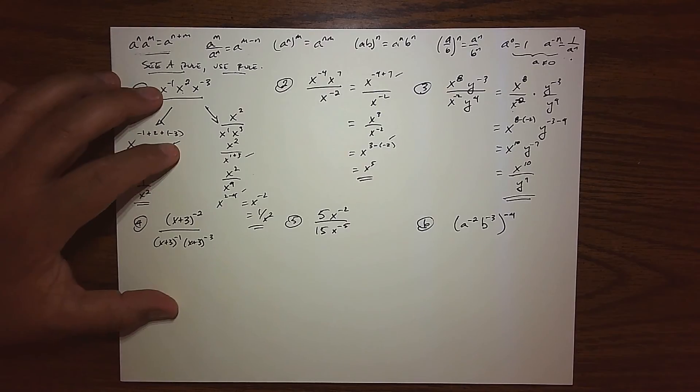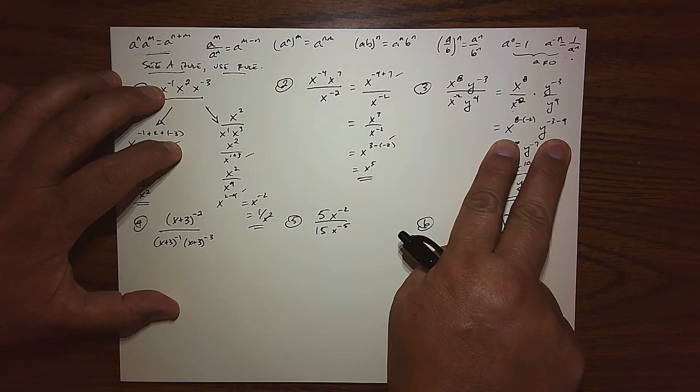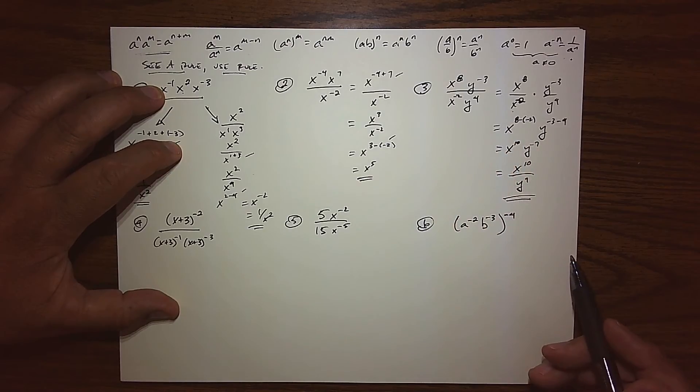Using what I see a rule, use a rule. So I first saw not even an exponential rule, just breaking it up into fractions. Then I saw the quotient rule, did that. And then I saw my negative exponent. And so that's how I chose to do it.